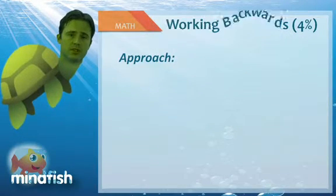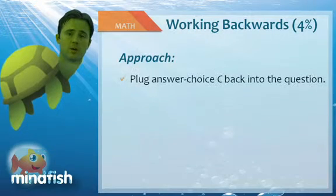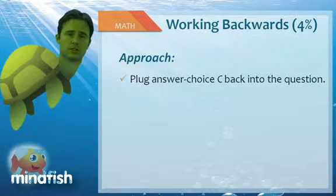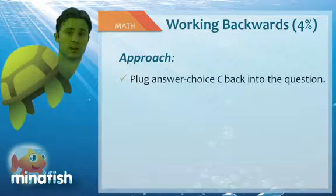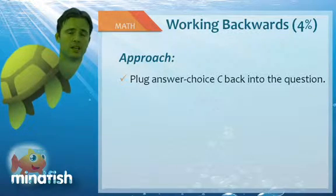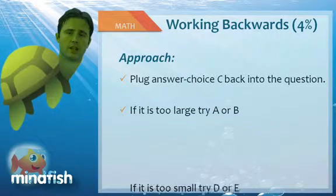The approach is fairly simple. This is the old plug and chug strategy. We're going to be plugging in an answer choice. We're going to start with answer choice C, and we're going to see if that answer works. If it does, we're done, and often times it is C. If it doesn't, then we're going to go on and try A or B or D or E.